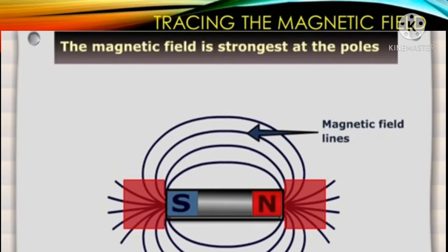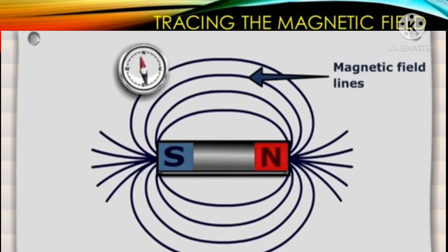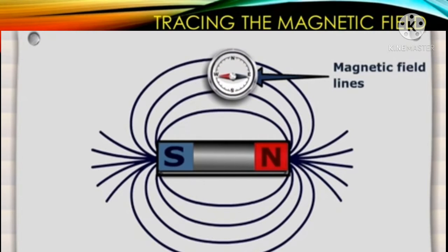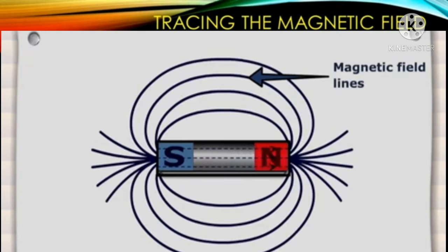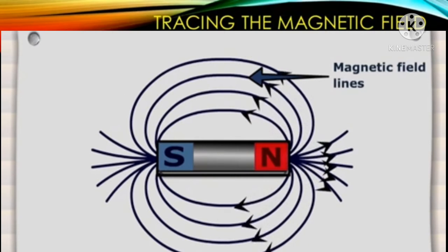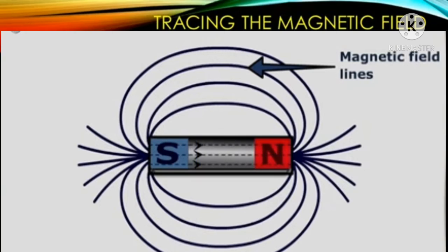A curved line is then drawn by joining the plotted points marked around the magnet. This represents the magnetic line of force. In the same way, several magnetic lines of force are drawn around the magnet. These curved lines around the bar magnet represent the magnetic field of the magnet. The direction of the lines is shown by the arrowheads. The compass needle gets deflected to a large extent when it is closer to the magnet. When the distance is large, the deflection of the needle gradually decreases. At one particular position, there is no deflection because there is no magnetic force at that position.